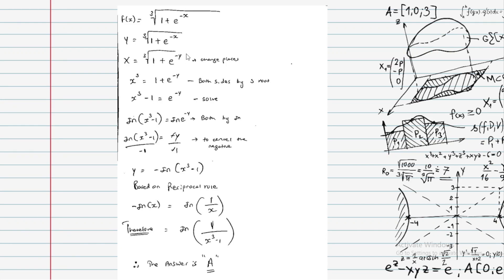Both sides: raise both sides to the power of 3 (cube both sides) to eliminate the cube root. So x cubed equals 1 plus e to the power of minus y.